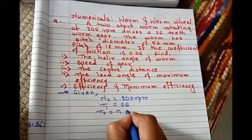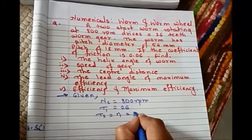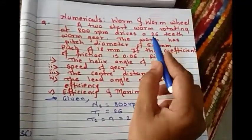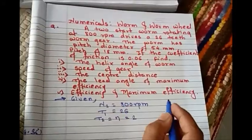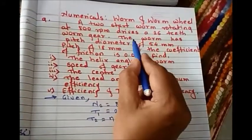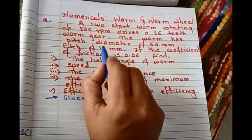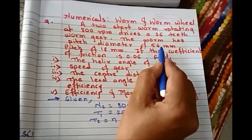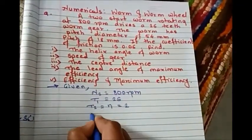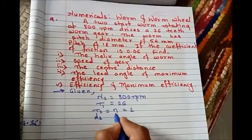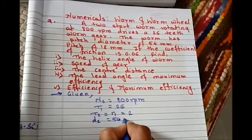The worm has pitch diameter 54 mm, so worm diameter d2 is 54 mm.